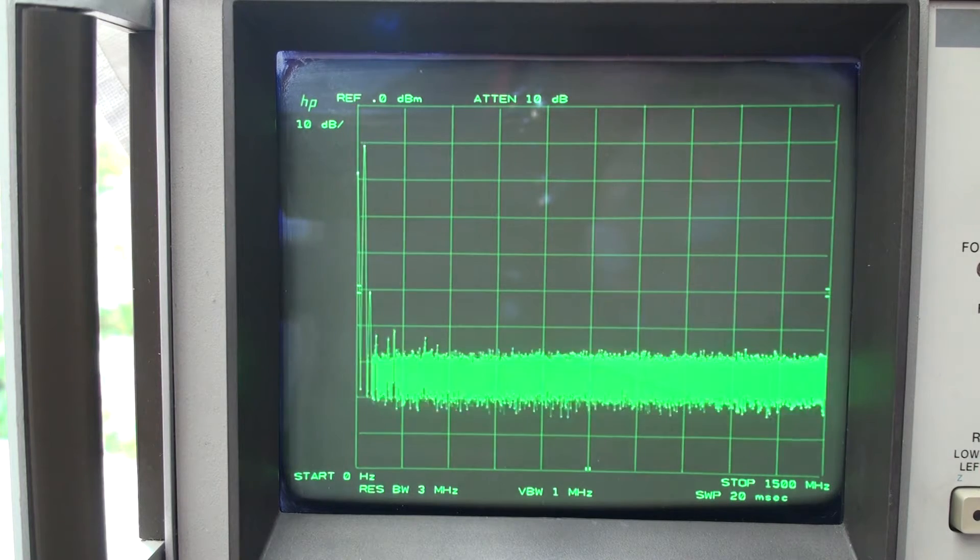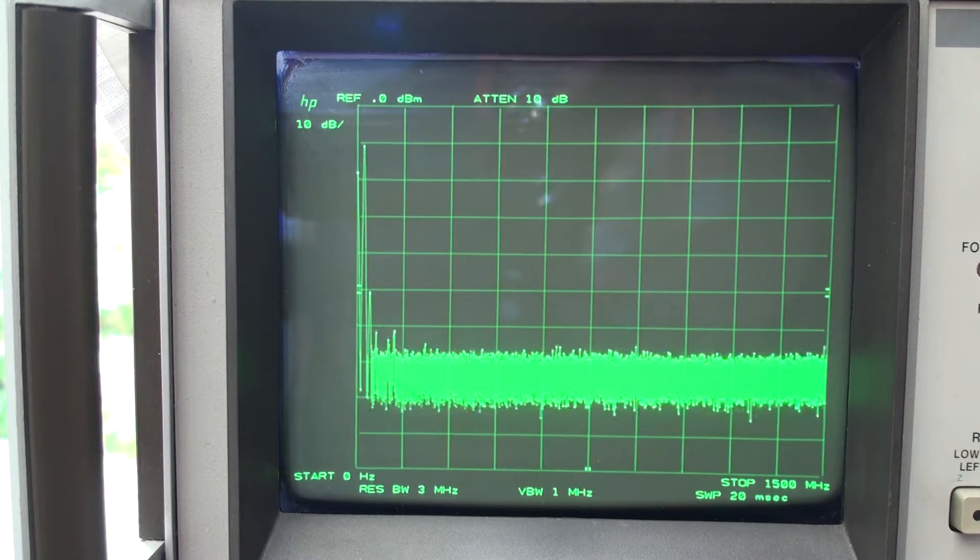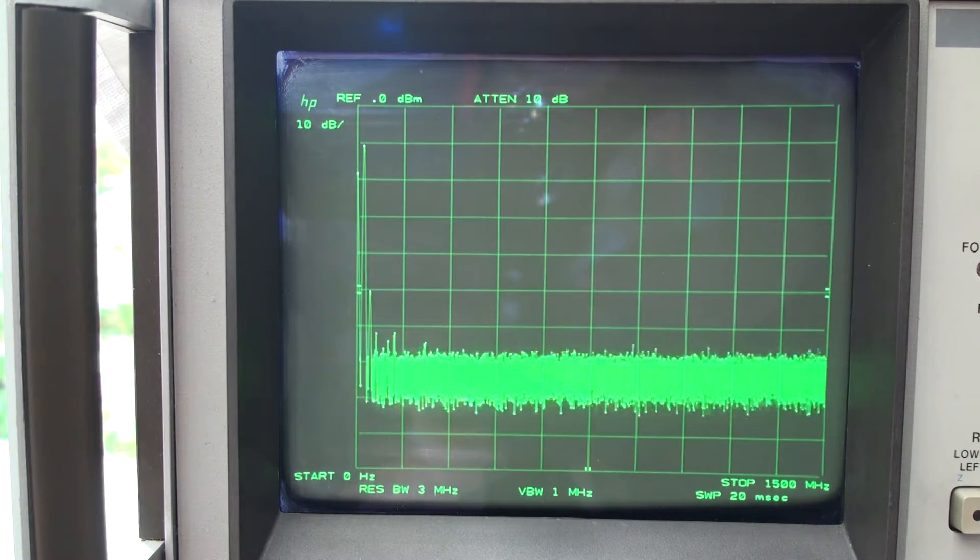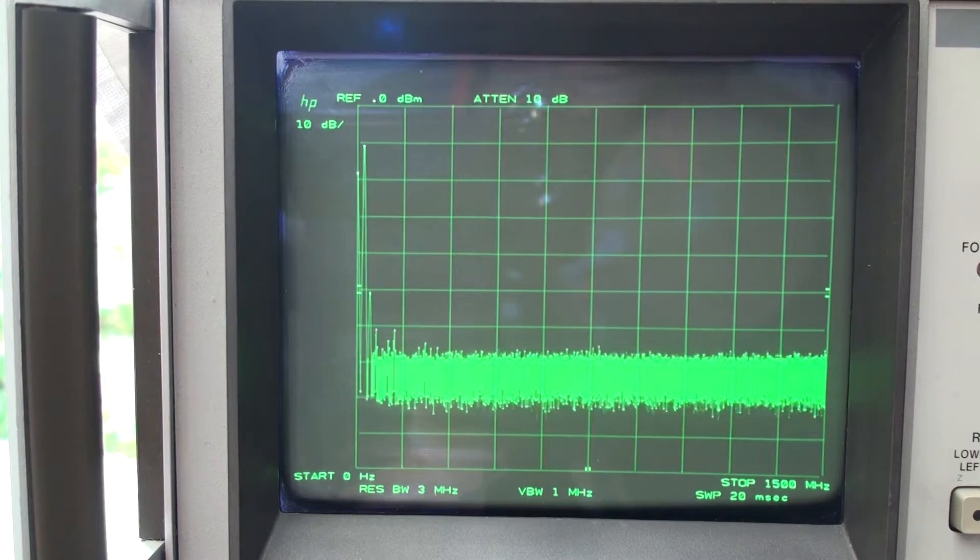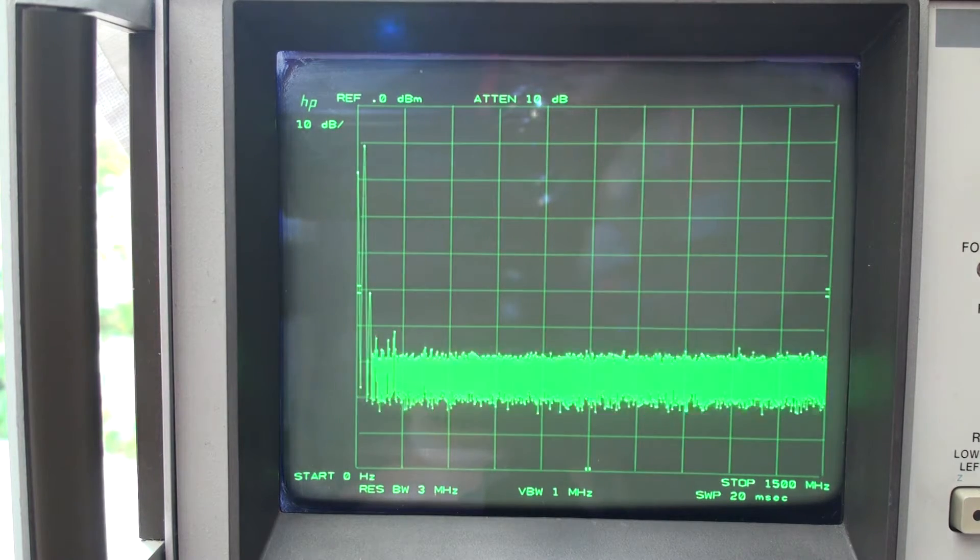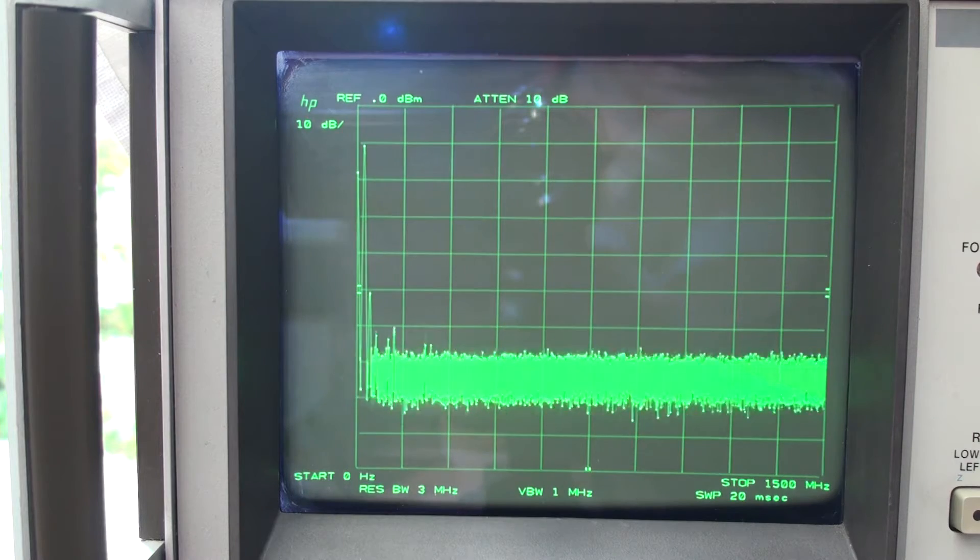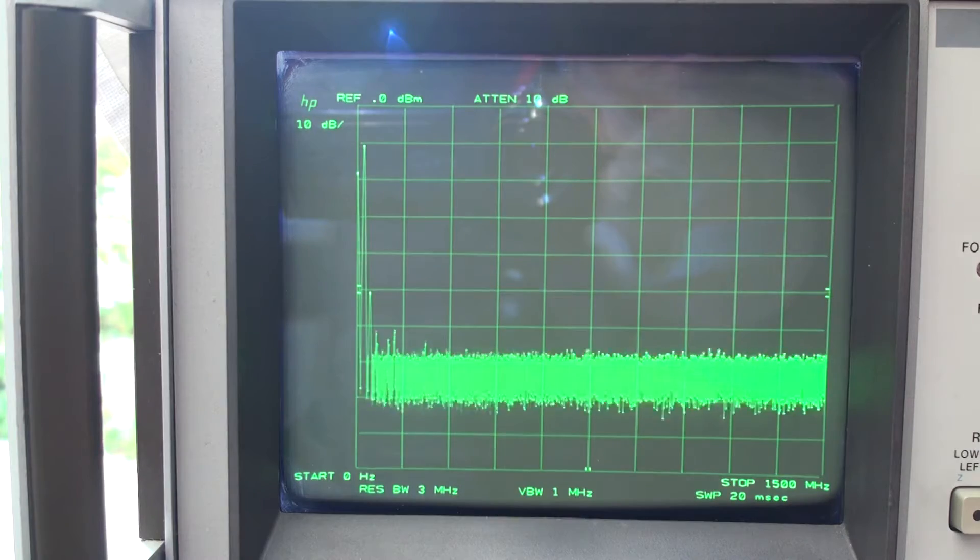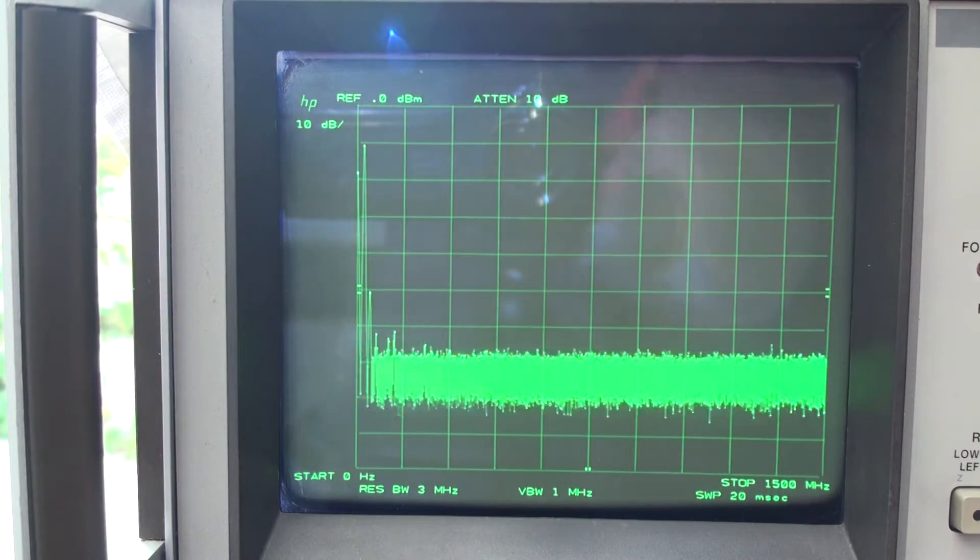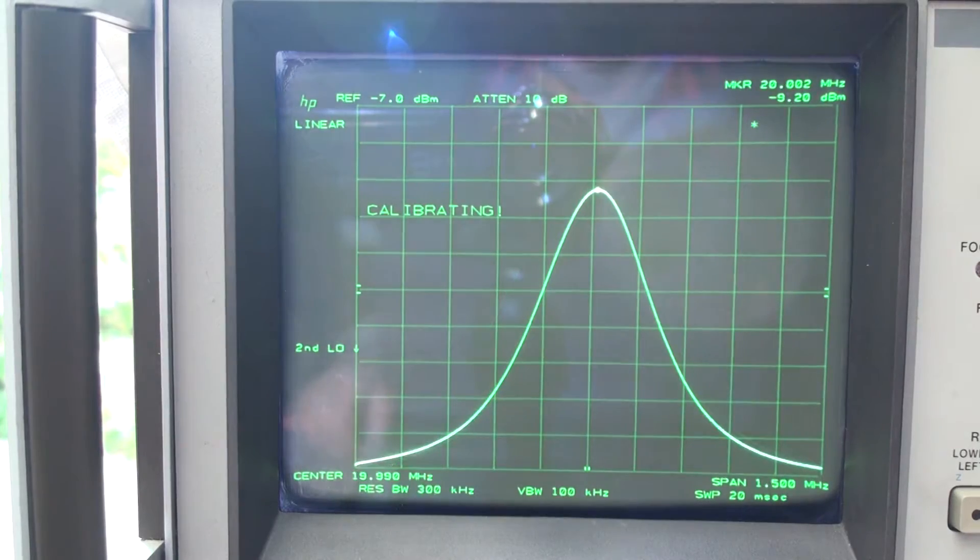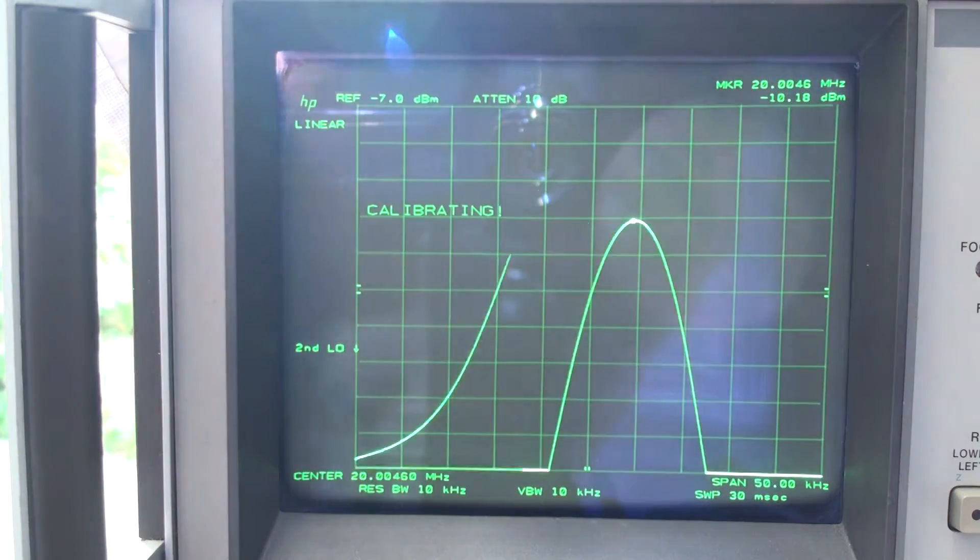So it suggests that maybe the ROM might be corrupted. But it certainly seems to work if I enter the parameters in manually. So we're going to do a calibration routine on the item now. This will pick up anything that's wrong with the spectrum analyzer that's not working correctly. I'm hoping this will go straight through. So what I'm doing is I shifted W, which is frequency span, and that will start off the calibration routine.